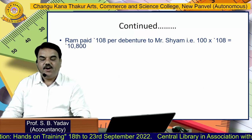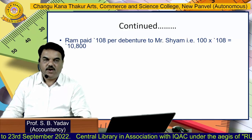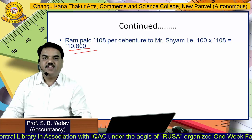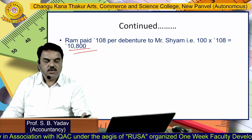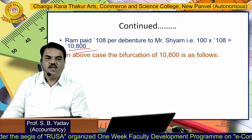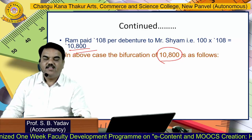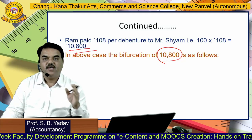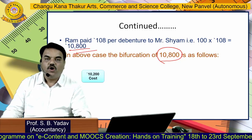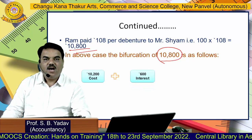Shyam said it is Cum Interest. Cum Interest means this 108 rupees includes interest. Ram does not have to pay interest extra — he pays 108 rupees per debenture. Ram paid 100 multiplied by 108, which equals Rs. 10,800 to Shyam. Now, in this 10,800, we need to find the bifurcation: what is the cost and what is the interest?